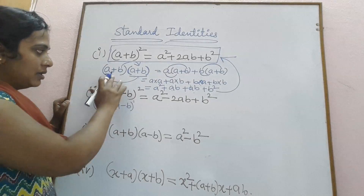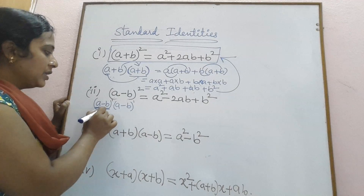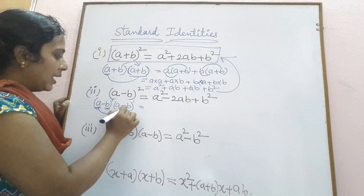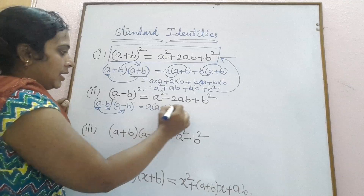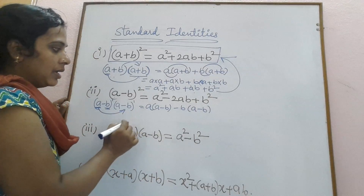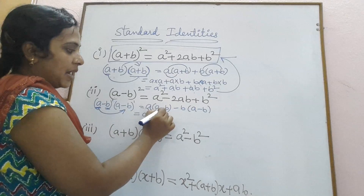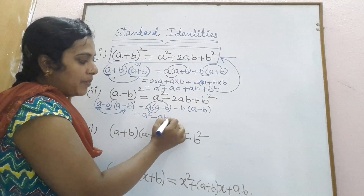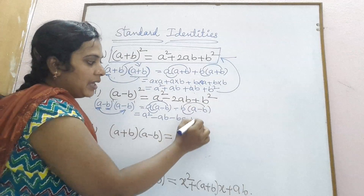The process is the same as for the first identity. In the first binomial expression, the first term is a and the second term is minus b. So a is multiplying the whole second binomial factor: a into a minus b. Then minus b, the second term, multiplies: minus b into a minus b. This gives a into a, that is a squared; plus into minus gives minus ab; then minus into plus gives minus ba; and minus into minus gives plus b squared.